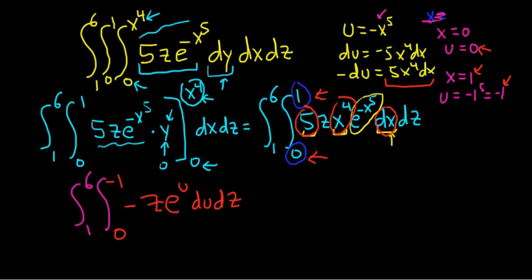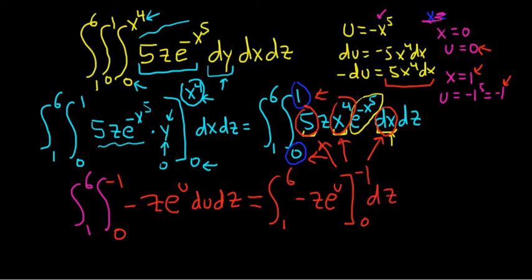And that should be okay, right? Again, the negative du became all of these red circles. That's what's here. 5x to the fourth dx is negative du. The z just kind of hangs out. And then the dz is here. So now we can integrate. The integral of e to the u is simply e to the u. So we have the integral from 1 to 6. And we're integrating e to the u, so we just get e to the u. So we get negative z e to the u. And we're going from 0 to negative 1. And then we have the dz.